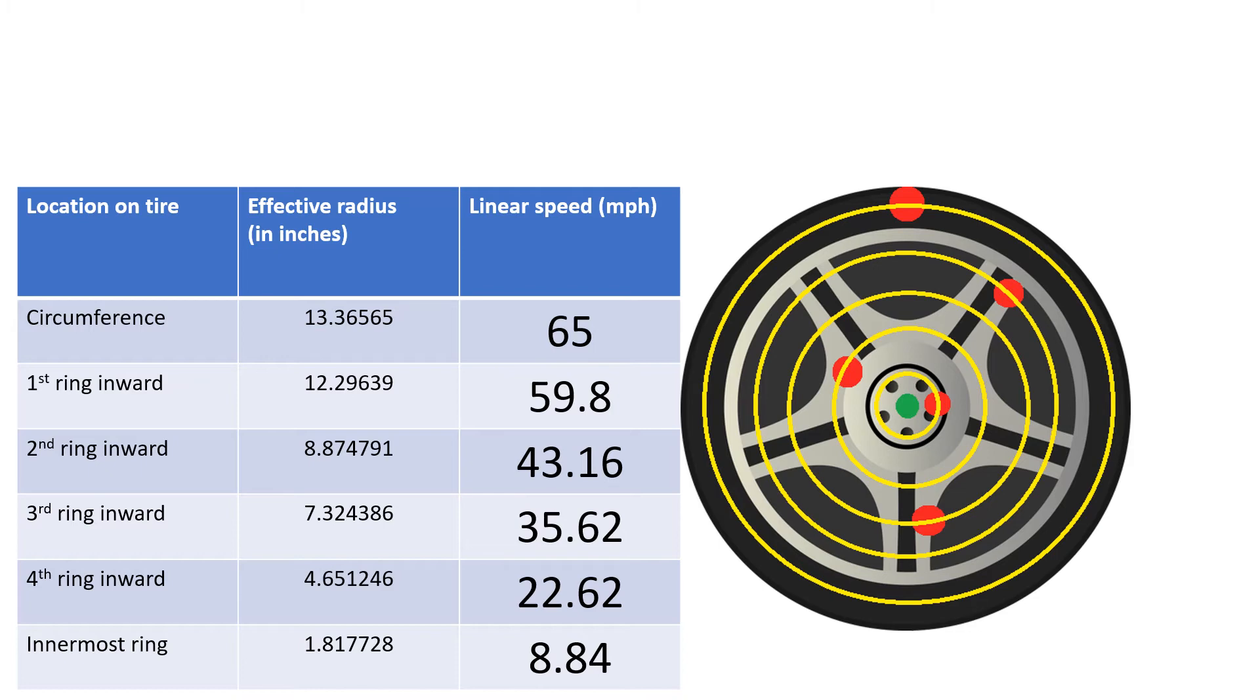With the innermost ring with its effective radius of 1.817728 inches, its linear speed of 8.84 miles per hour. While the outer circumference with its effective radius of 13.36565 inches, its linear speed of 65 miles per hour.